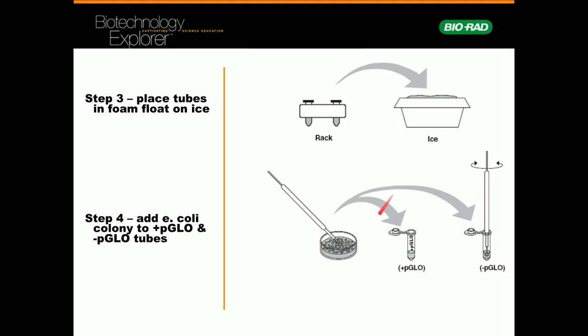In step four, you are going to select a colony. Each circle is a colony. One colony from each - select one colony and add to the plus p-glo, and select another colony and add to the minus p-glo. You're going to spin it between your fingers to wash off all of the bacteria. One colony is plenty. Bacteria replicate every 20 minutes, so over a 24-hour period, one bacteria is going to replicate and produce more than a million offspring. So a colony contains more than a million bacteria. Please don't take more than one because it may interfere with the process.